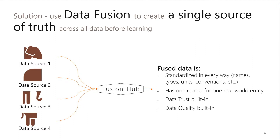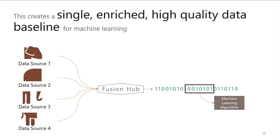This is a difficult problem but it's solved. The assertion I'm putting forth today is that data fusion is an essential prerequisite to machine learning across multiple data sources. Data quality and data trust have to be built in. Once you have one fused data stream instead of four disparate data streams, your machine learning algorithm goes back to a single enriched, high-quality data baseline that it has to learn on — and now this baseline contains all the pieces of the puzzle, so you can really up the complexity of your algorithm.